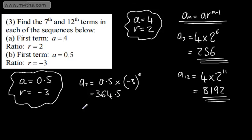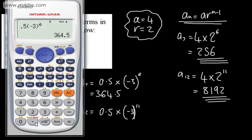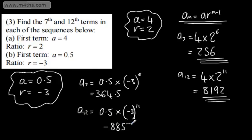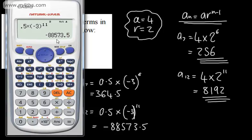If we now look at the 12th term, a sub 12, we're going to have 0.5 multiplied by negative 3 to the power of 11. In a calculator, you could write 0.5 times by negative 3 to the power of 11, and that's going to give us negative 88573.5. That gives us the 12th term. Nice and straightforward.